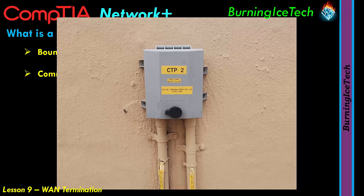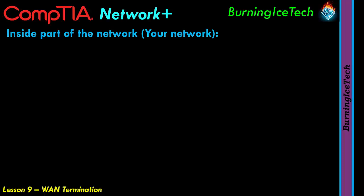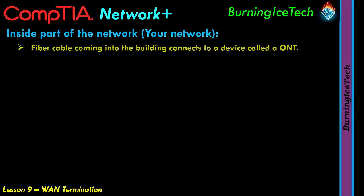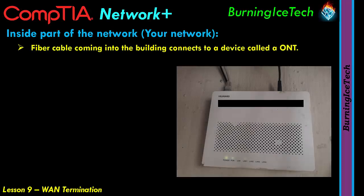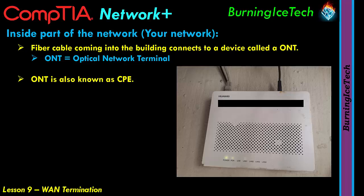When I decided to get fiber, the provider came out to my house, opened that little termination box or demarc box, and from that box they spliced a fiber cable into my house, blowing it with compressed air into the pipe. On the inside of my building, the fiber cable normally connects to a little box called an ONT — short for optical network terminal. This device is also known as a CPE, which is short for client premises equipment.